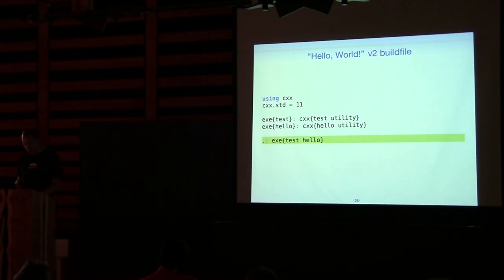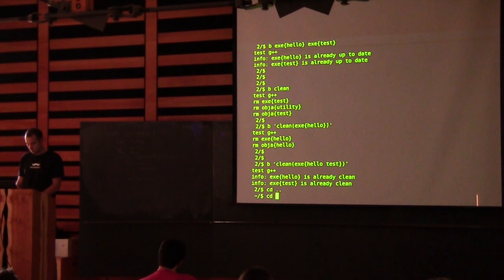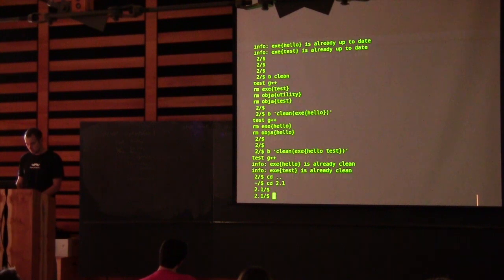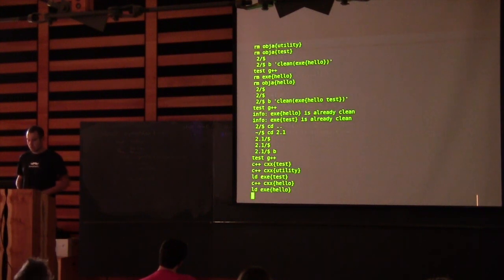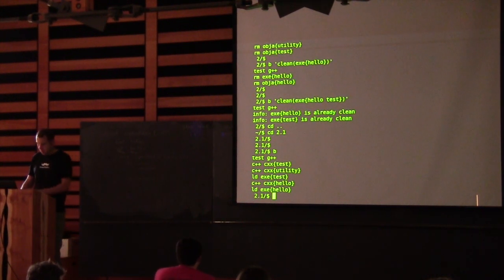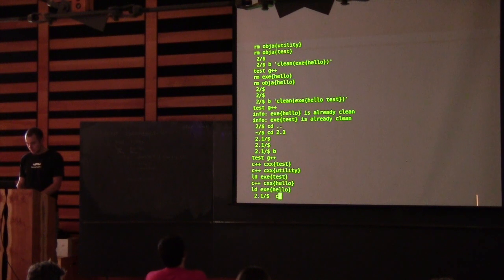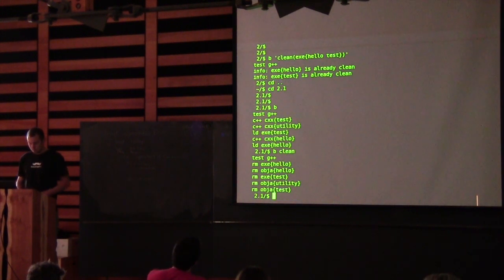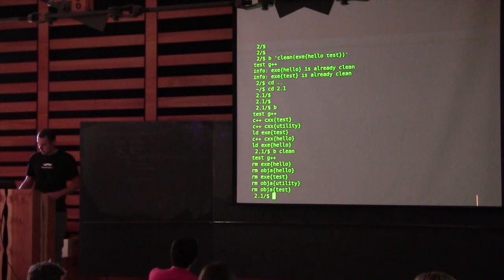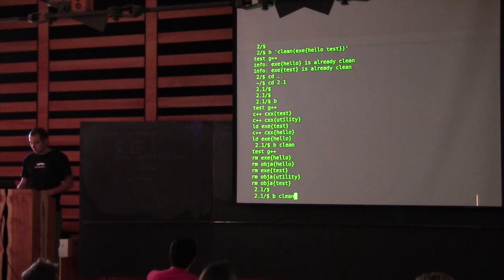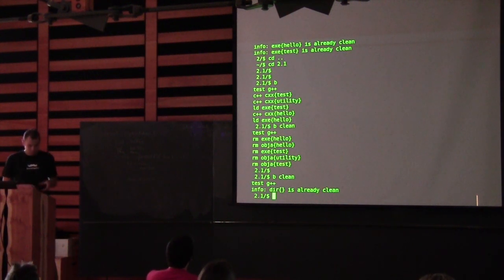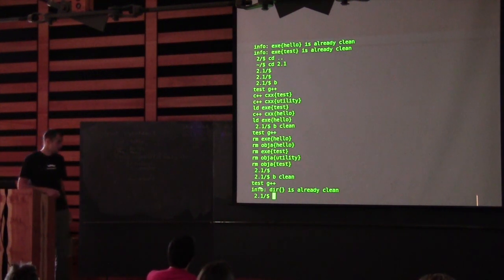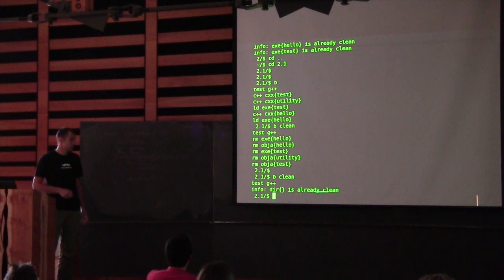So this is our fixed build file — we add one line: the default current-directory target with two prerequisites, both our executables. Let's see if it actually works. Now it builds everything. And if we clean, it cleans everything. And if we clean again, we get the message that the current directory is clean.